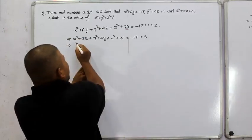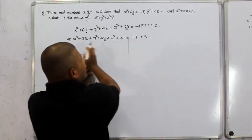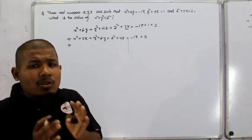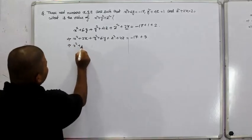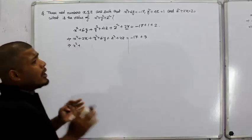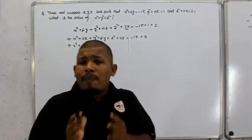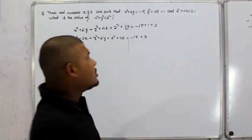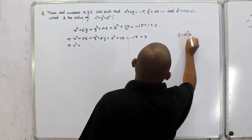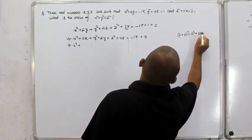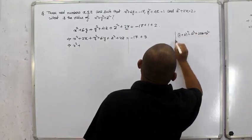First, we use the formula a plus b whole square equals a squared plus 2ab plus b squared. We need to identify the 2ab term in each case.